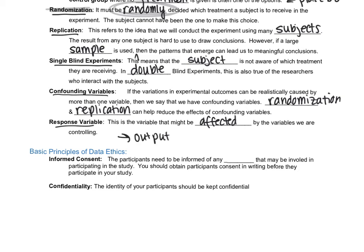We have data ethics is also super important. If you do a study, you should follow ethics. So informed consent is important. The participants need to be informed of any risks that may be involved in participating in the study. That should make sense. And you should also obtain written consent before they participate. And obviously, participants should be kept confidential. So just a lot of vocab. In the next video, I'll do a bunch of examples.